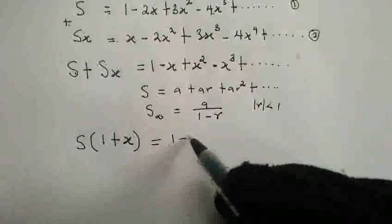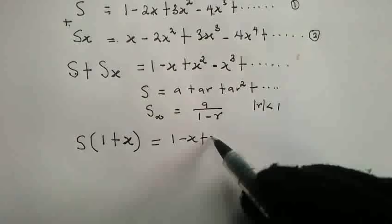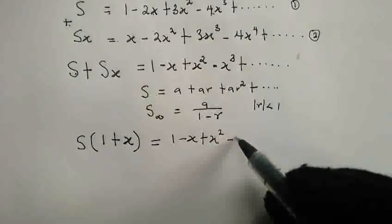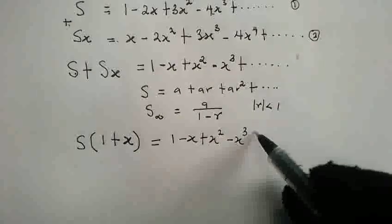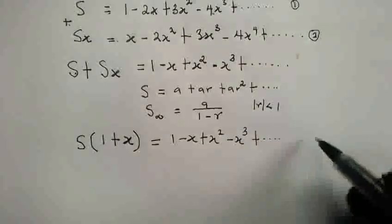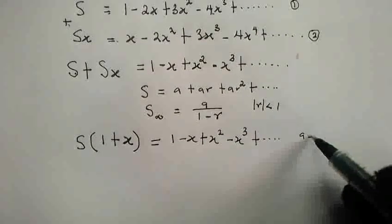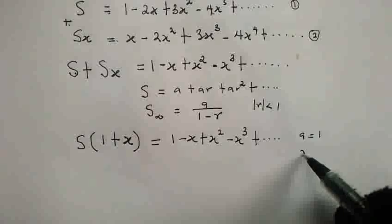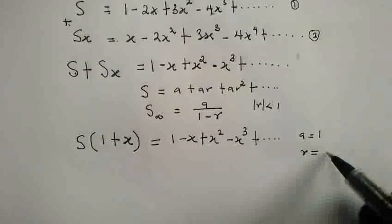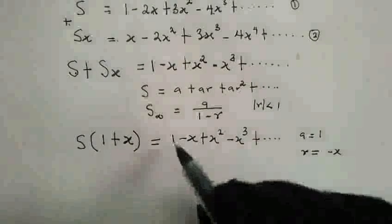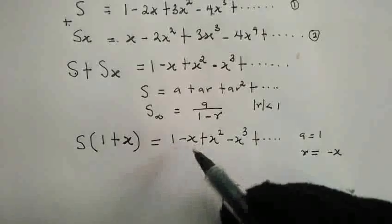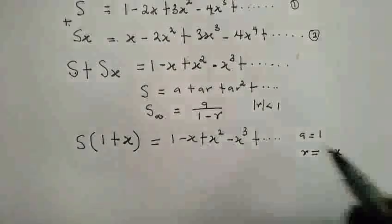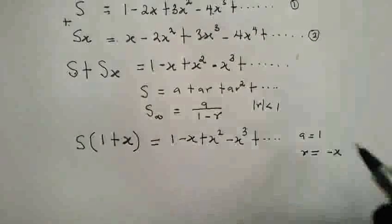Now, I have 1 minus x plus x squared minus x cubed plus and so on. So, we can see that here our a is equal to 1. Our common ratio r is going to be negative x, because 1 times negative x is negative x and negative x times negative x is x squared.